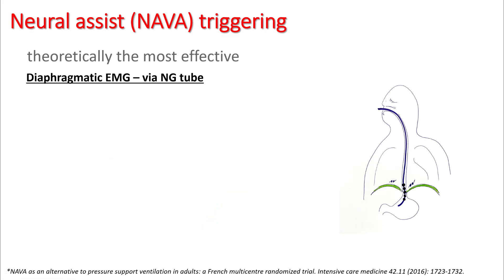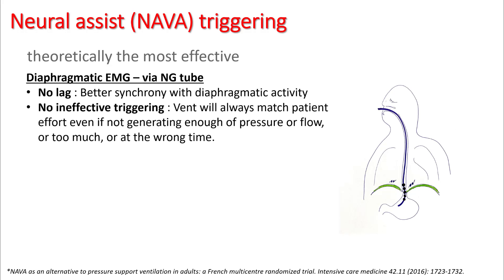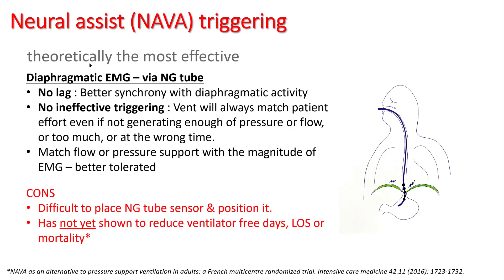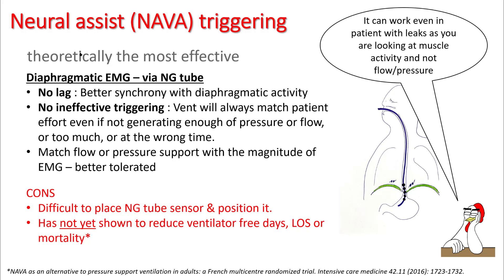Neural assist triggering is theoretically the most effective. You place an NG tube filled with electrode sensors and measure the electromyogram of the diaphragm. This avoids any lag because you are triggering the breath from the EMG rather than from the flow. Another advantage is there is no ineffective triggering — the vent will always match patient effort, even if the patient is not generating enough pressure or flow. Issues include difficult placement and dislodgement of the NG tube, and this method has not yet shown to reduce vent-free days, length of stay, or mortality. One additional advantage is that it can work in patients with leaks, since you're looking at muscle activity and not changes in flow or pressure.